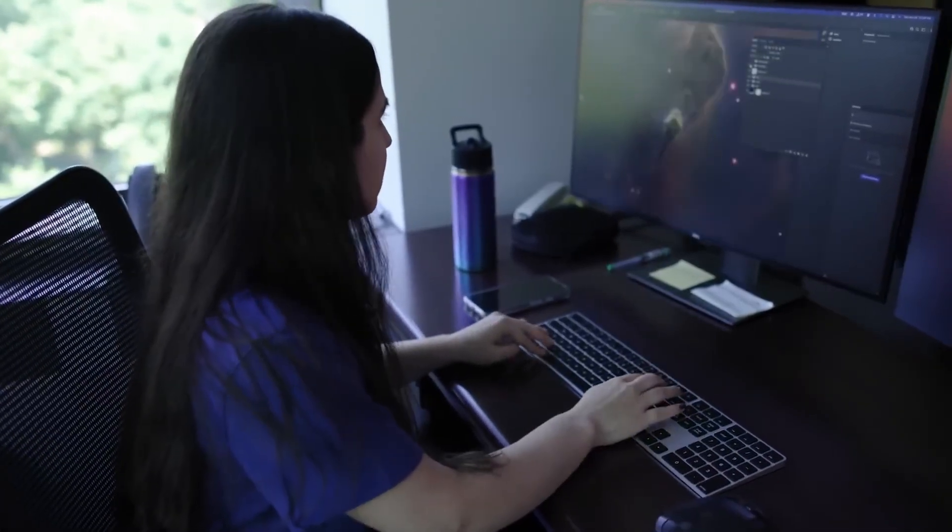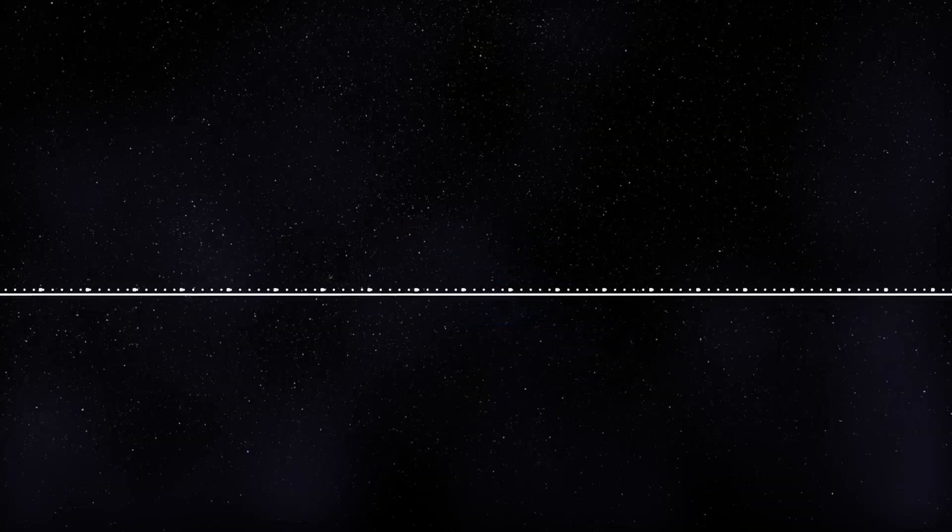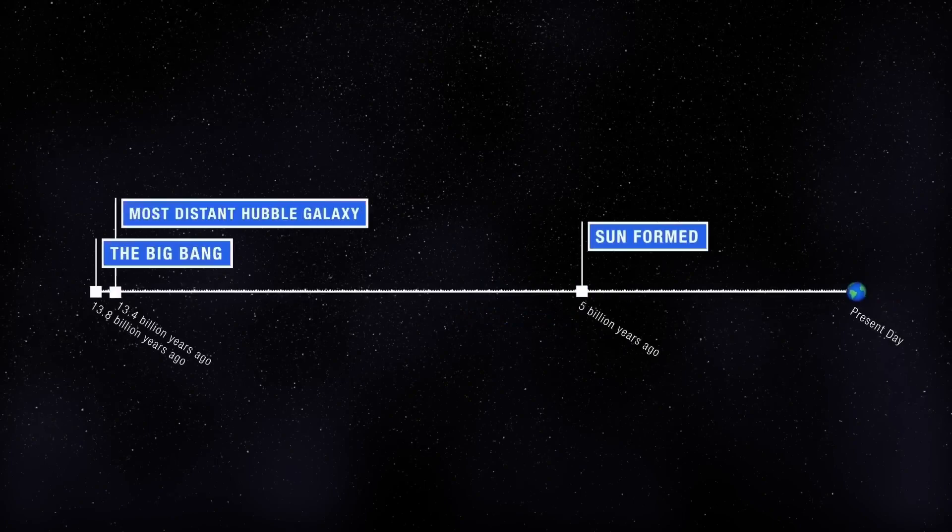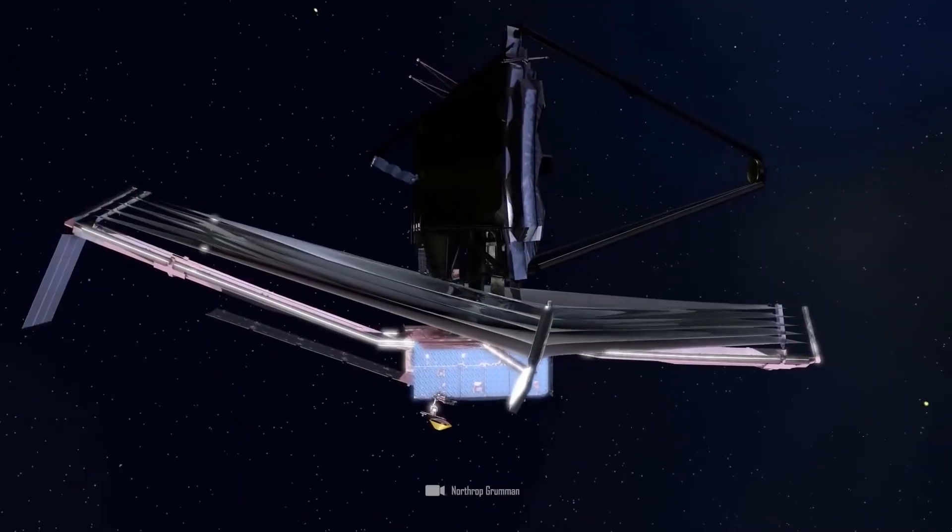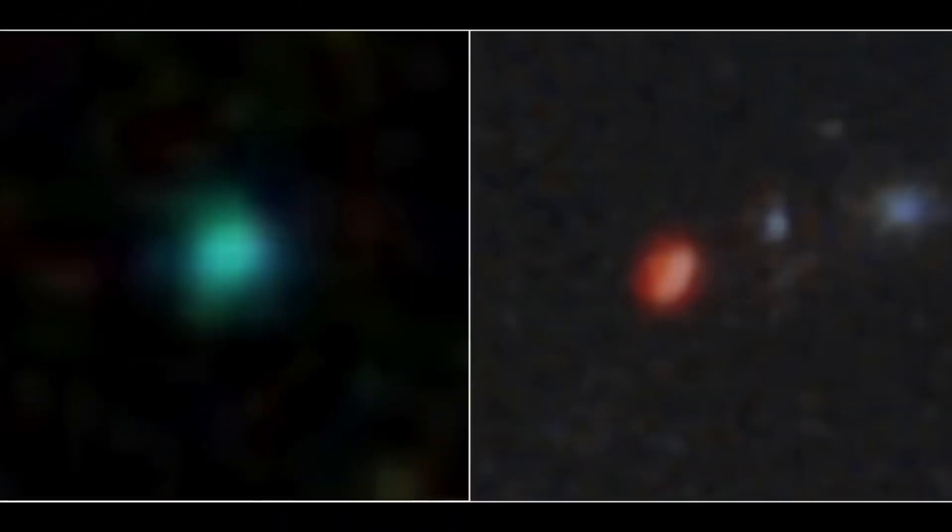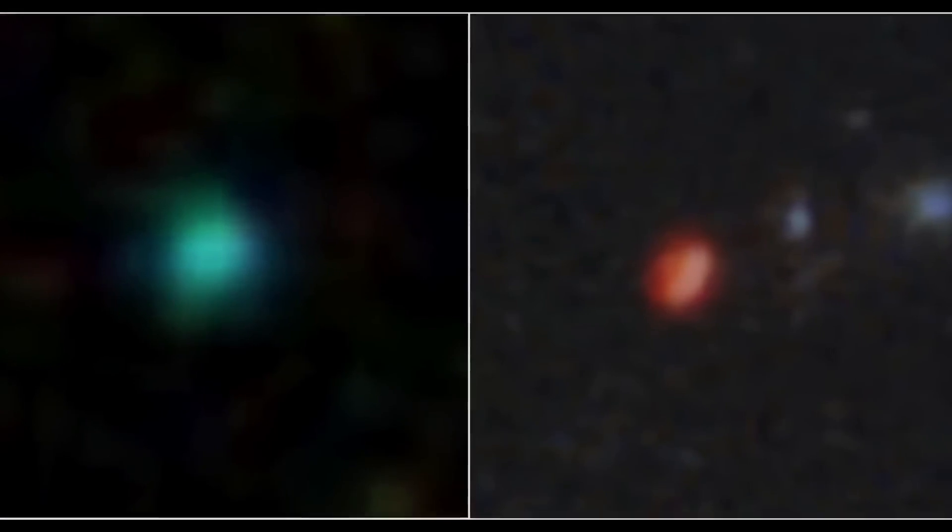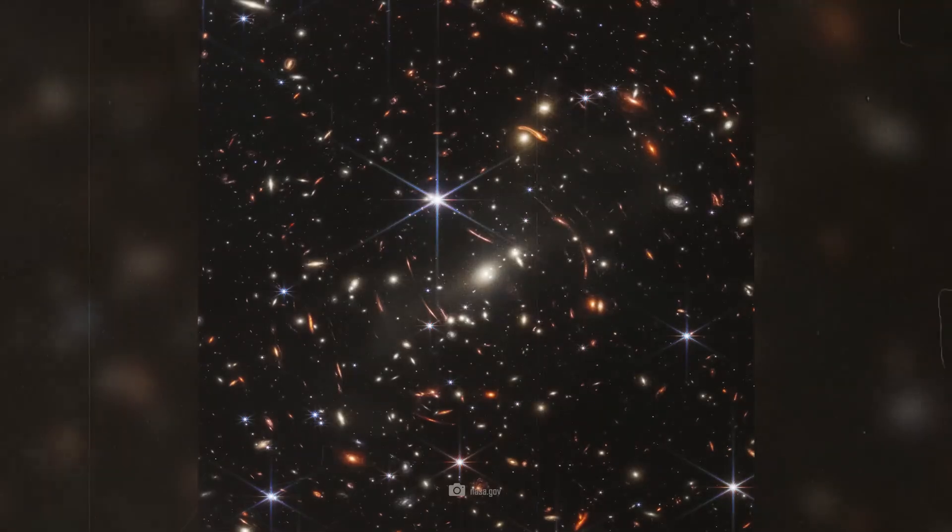Consider this: when the Webb Telescope looks as far into space as possible, it will only see about 46.5 billion light-years away. This is the radius of our visible universe, which we call the Hubble Radius or Hubble Sphere. By the way, the most distant galaxies discovered by the James Webb Telescope also fall under the Hubble Sphere region.